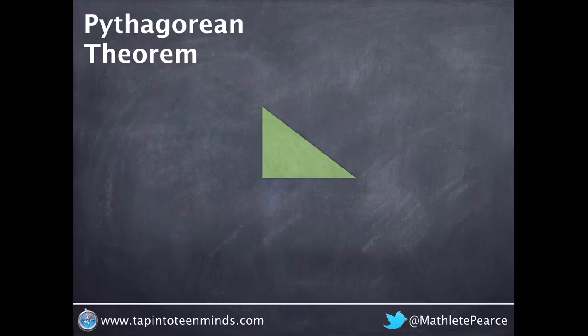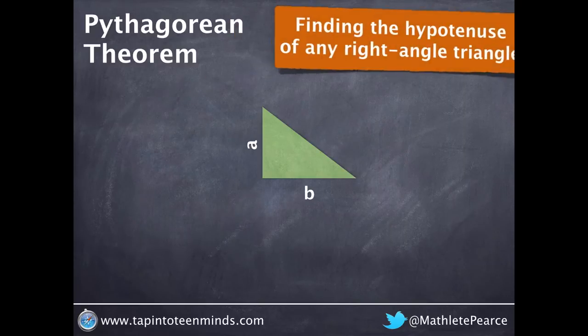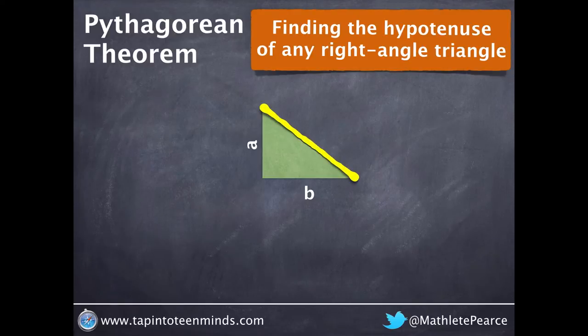In this video we'll look at a general case for finding the hypotenuse of a right-angled triangle. In the previous example we began by squaring the side lengths of our two shorter legs.